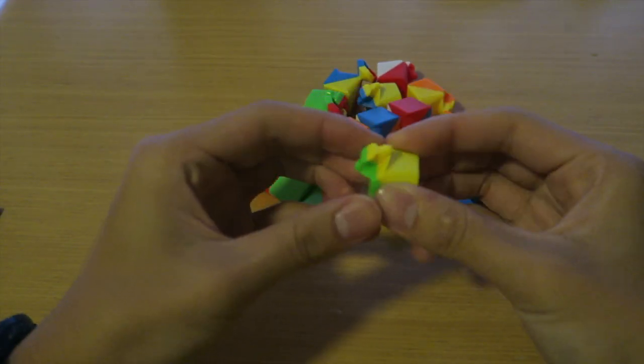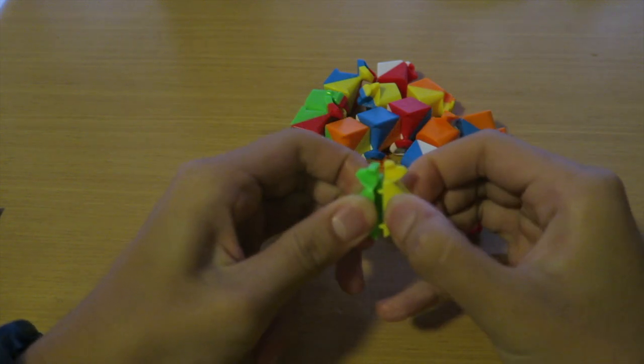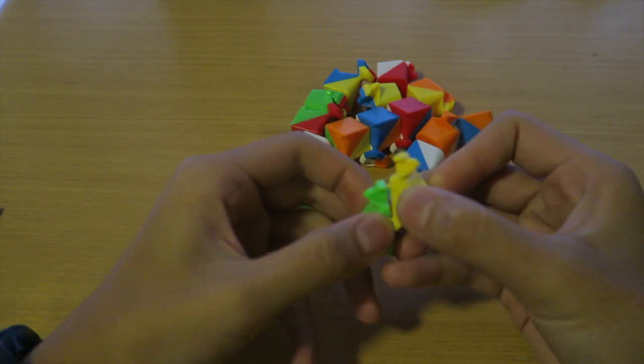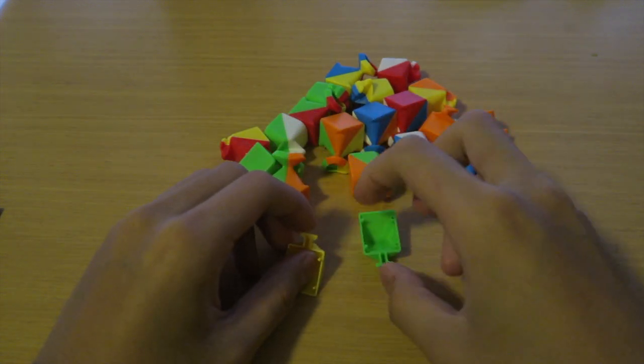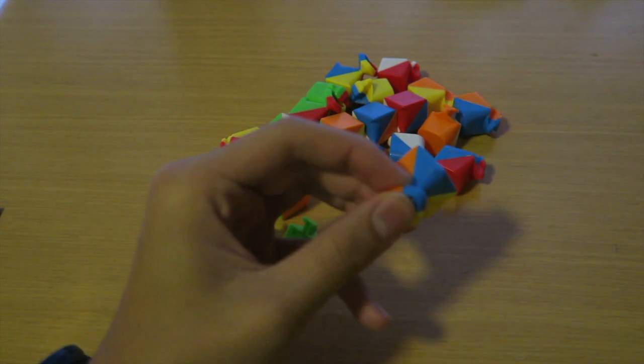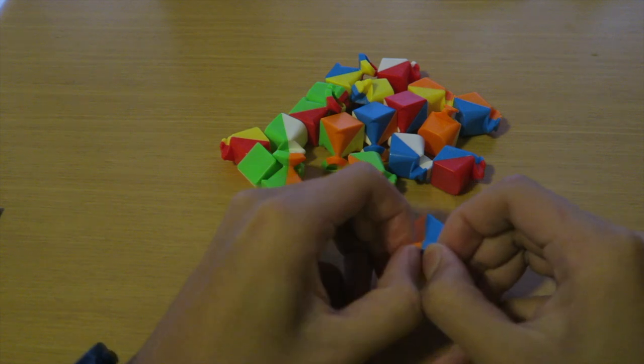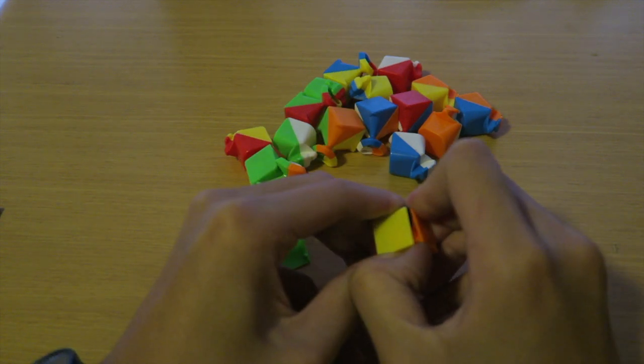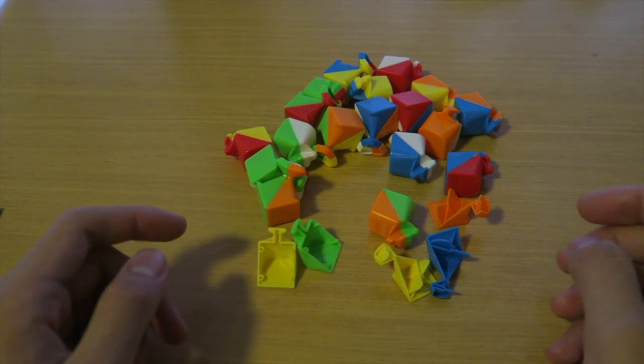Basically what you want to do is you want to take one edge piece and you want to separate them. So as you can see, now you got two separate pieces from an edge piece. A corner piece has three parts, so when you take them apart there will be three parts. Now let's do it for every single one of them.